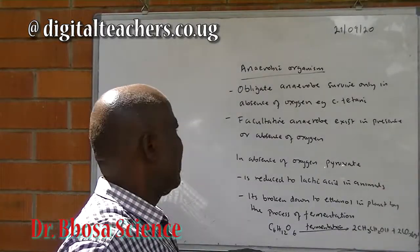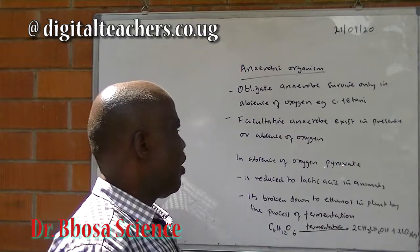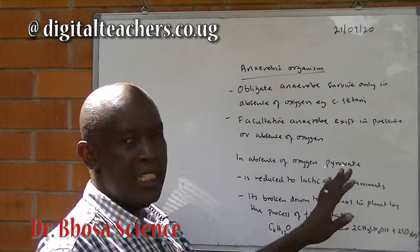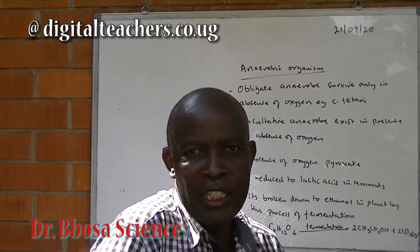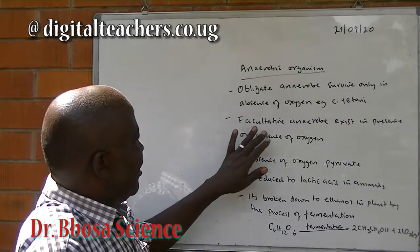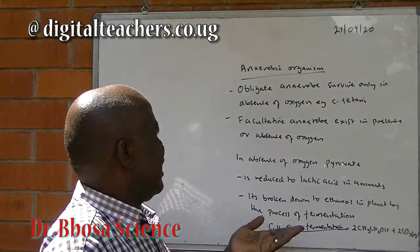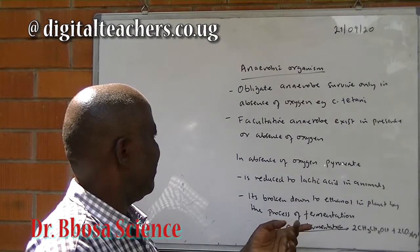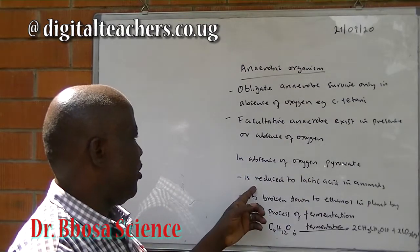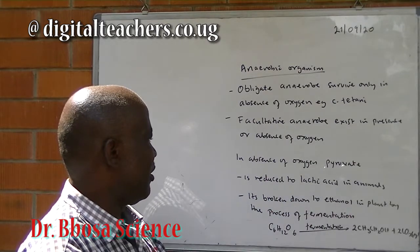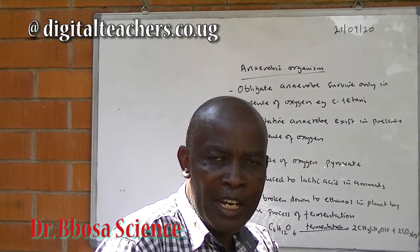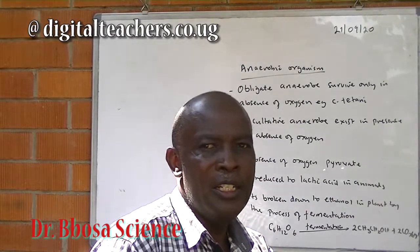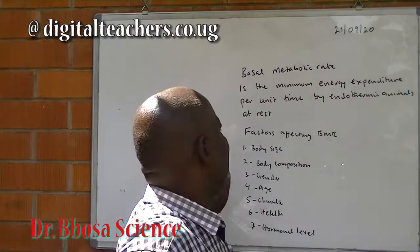Anaerobic organisms, called obligate anaerobes, survive only in the absence of oxygen. In the absence of oxygen, pyruvate is reduced to lactic acid in animals, or broken down to ethanol and carbon dioxide in plants, in the process called fermentation.